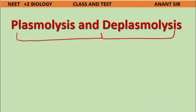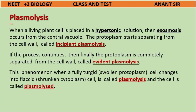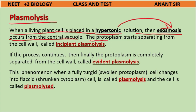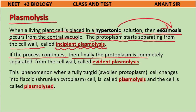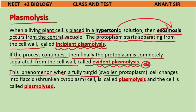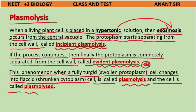Plasmolysis and de-plasmolysis: When a living plant cell is placed in a hypertonic solution, exosmosis occurs from the central vacuole. The protoplasm starts separating from the cell wall — called incipient plasmolysis. If this process continues, the protoplasm completely separates from the cell wall — called evident plasmolysis. This phenomenon, where a fully turgid protoplasm cell changes into a flaccid, shrunken cytoplasm cell, is called plasmolysis, and the cell is called plasmolyzed.